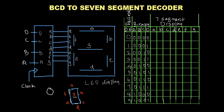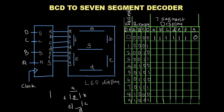To display 0, LEDs A, B, C, D, E, and F will be turned on, and LED G will be turned off. So in the truth table, A=1, B=1, C=1, D=1, E=1, F=1, and G=0 for decimal 0.